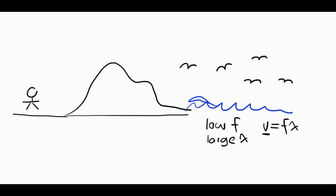Whereas, if we have a look at the seagulls, the seagulls are making that horrible squawking sound, which is a high frequency. And therefore, because of V equals F lambda and V being constant, if they have a high frequency, they must have a low wavelength.